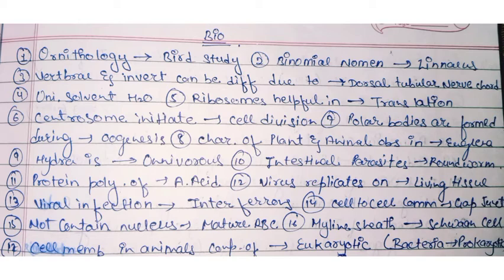Protein is a polymer of amino acids. Virus replicates on living tissue. Viral infection interference is a known phenomenon. Cell-to-cell communication is facilitated by gap junctions. The cell that does not contain a nucleus is the mature RBC.